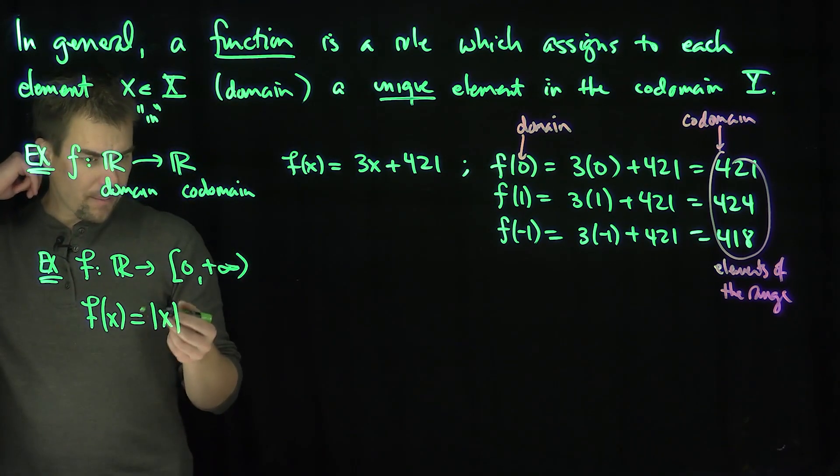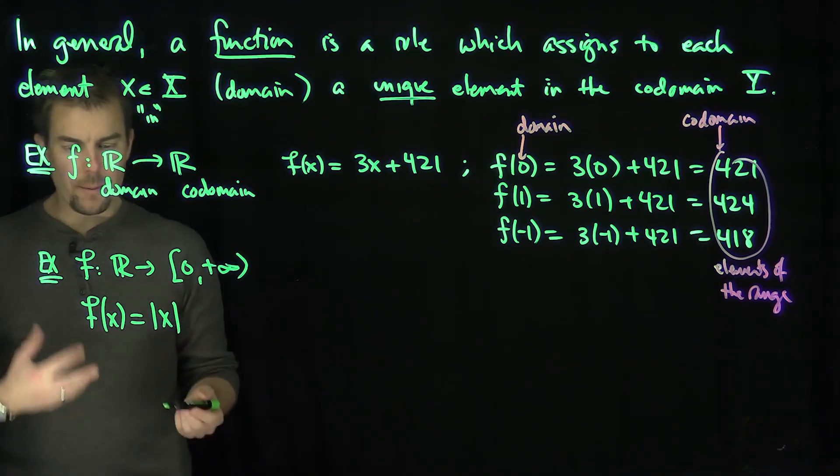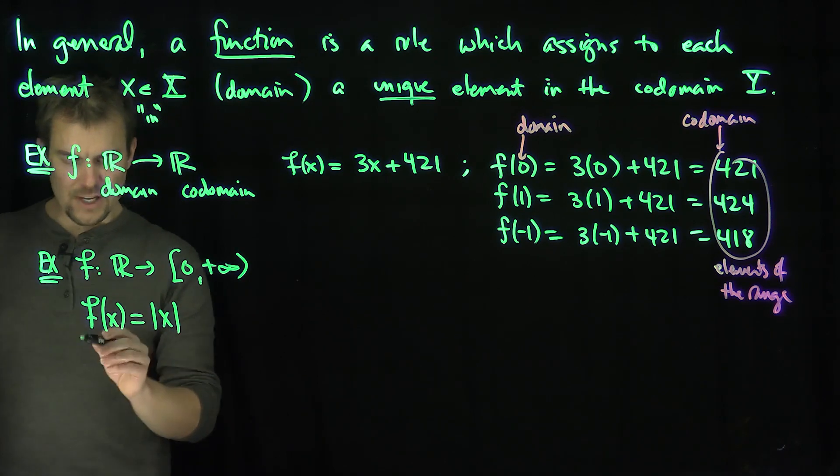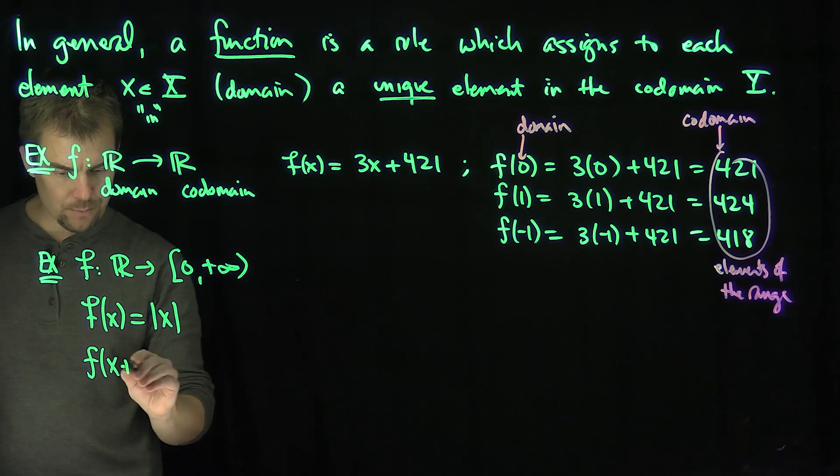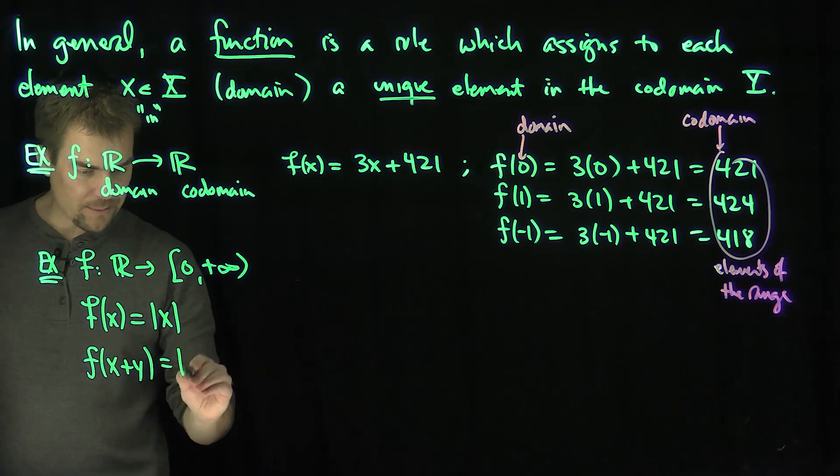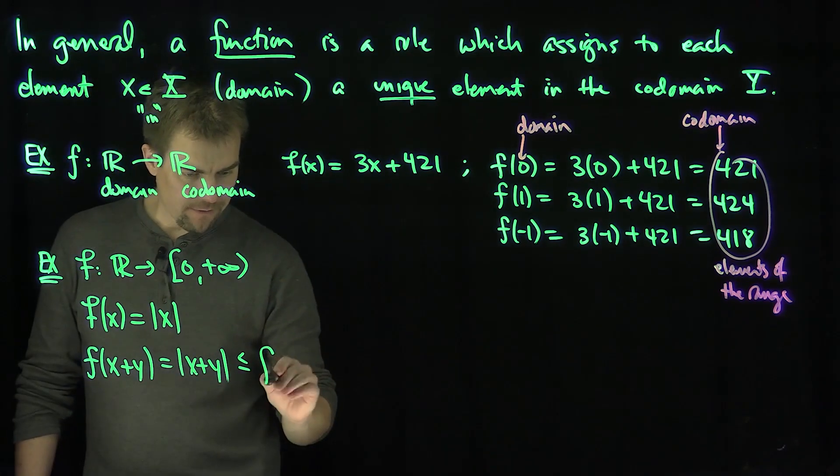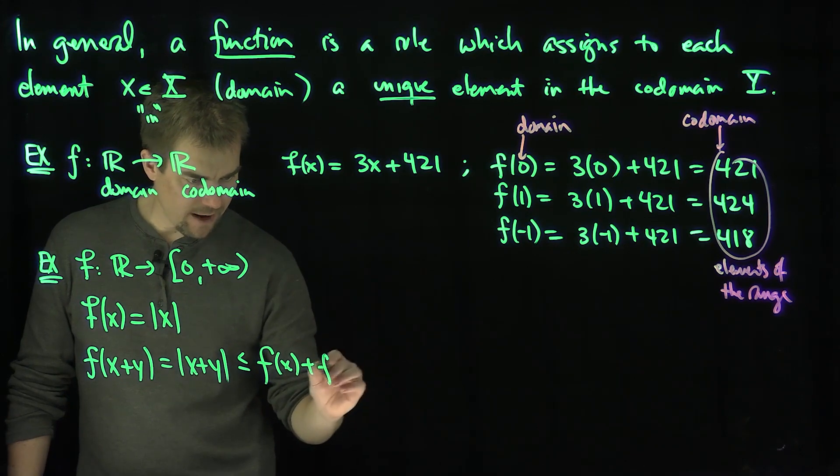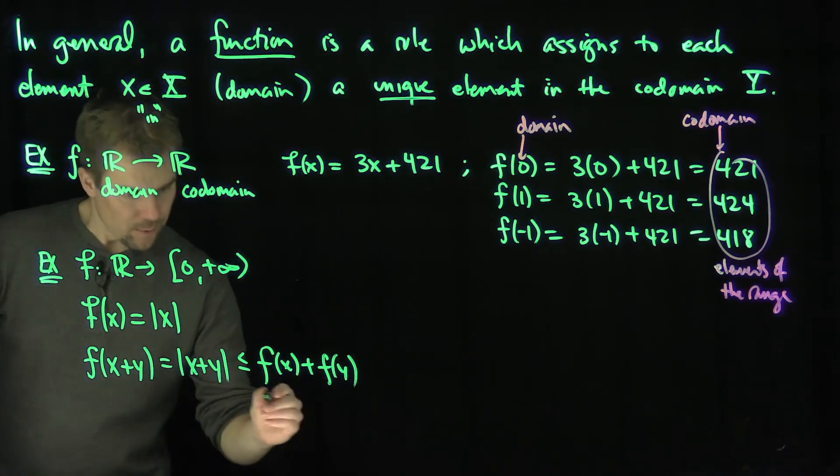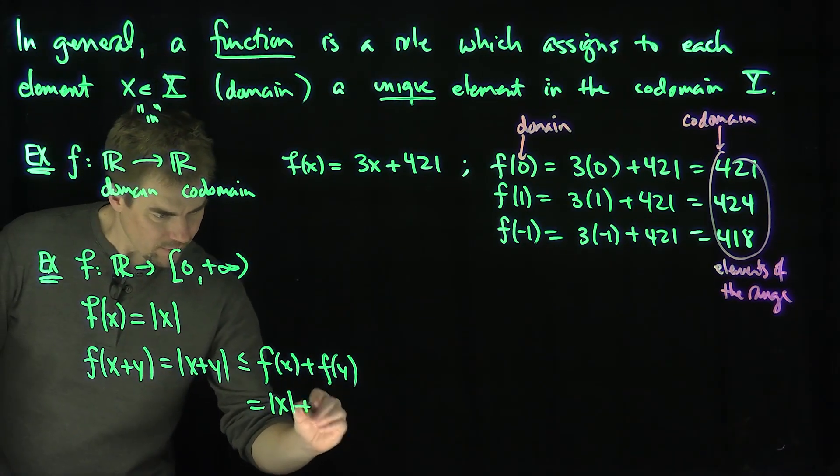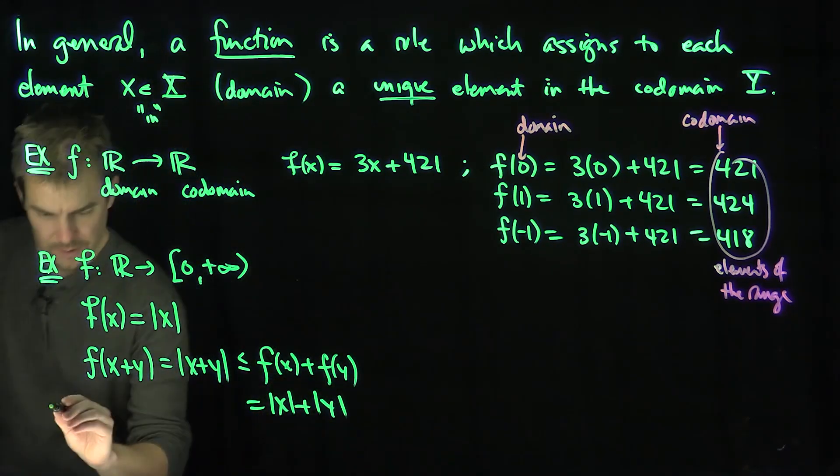And so we have some special properties of this function. We can start to see interesting properties of this function. So for example, one really interesting property of this function is that f(x+y), which is the absolute value of x plus y, is less than or equal to f(x) + f(y), which is equal to absolute value of x plus absolute value of y. That's called the triangle inequality.